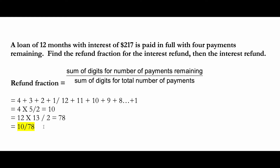What about the interest refund? Since the total interest here is $217, you will multiply 10 divided by 78 by 217. This should give you $27.82, which is the interest that will be refunded.